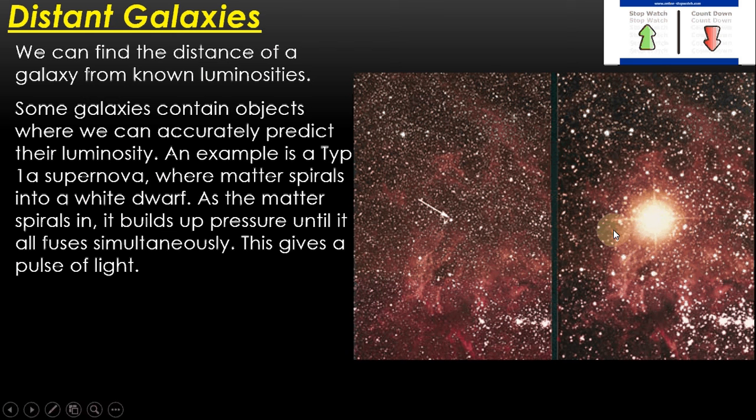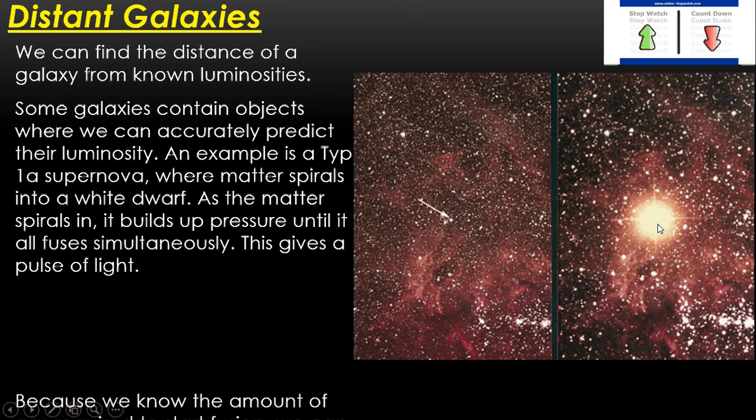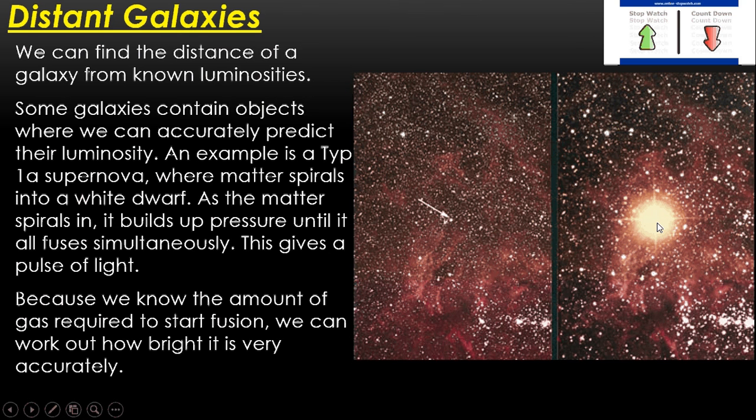What's really useful for us, though, is we know that it takes a certain mass of hydrogen to be accumulated in order for that process to start. We can also work out and predict how bright that would be, what that luminosity is. And because the fusion has to start at a certain mass, we know it has to always have a certain matter, a certain brightness, a certain luminosity. Now that means that we've got this known luminosity. We know that wherever we see a type 1a supernova, it doesn't matter where it is in the universe, it's going to be the same brightness. So once again, if we know the brightness, we can plug it back into the inverse square law, we can get the distance.